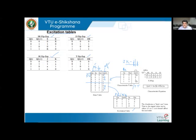For present state Qn=0 and next state Qn+1=0: the first two rows of the extended table share these same values. In both rows, J remains zero, so J=0 in the excitation table. However, K is neither consistently zero nor one — it varies — so K is don't care (written as D or X).